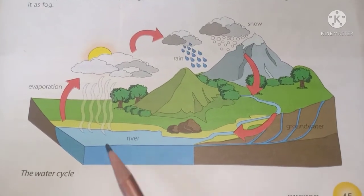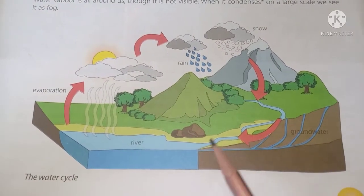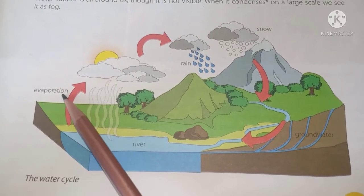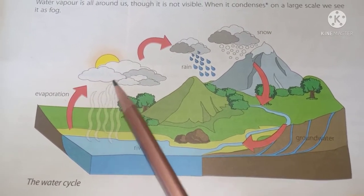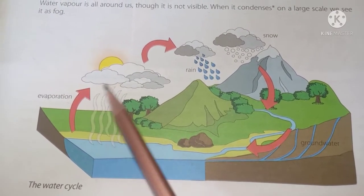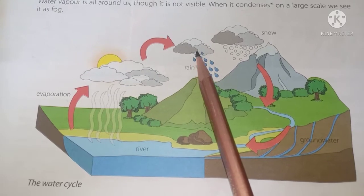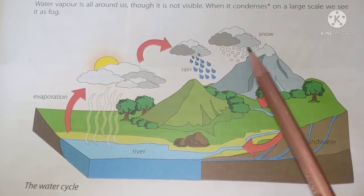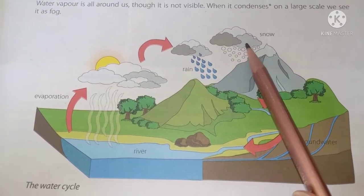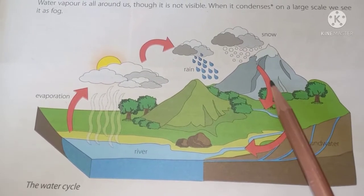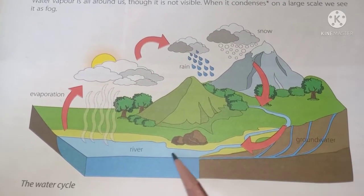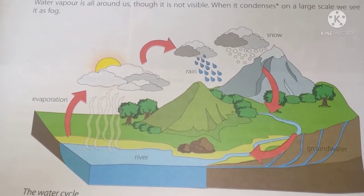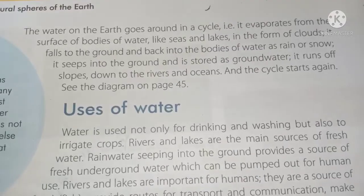This picture shows the water cycle — how water changes into vapors, then these vapors change into clouds and cause rain. Some clouds cause snow, which again changes into rivers, and this complete cycle makes the water cycle.